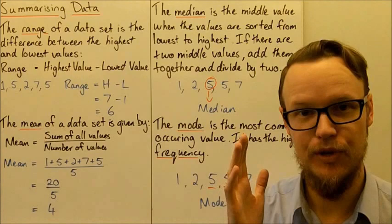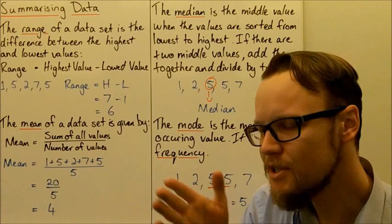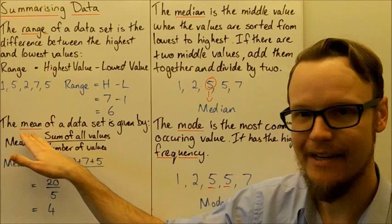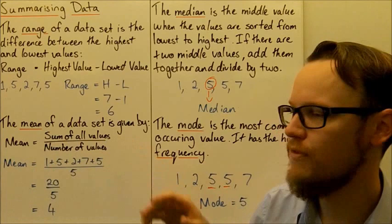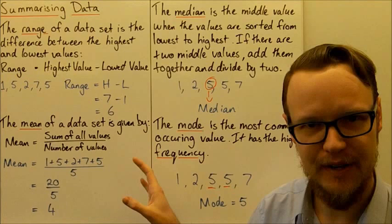We can also get what's called a representative value — you might have heard it called an average. There are different averages we can get, different representative numbers that say this is pretty much the majority of the values, around about the average kind of value we could expect from the whole data set. The first of these is called the mean. The mean is where we add up all of the numbers — we sum all the values together — and then divide by how many numbers there are. This is probably what most people think of when they hear the word average, but this specific average is called the mean.